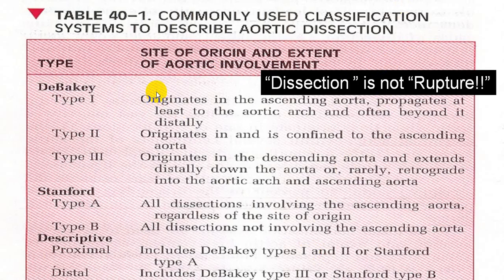Depending upon the dissection, aneurysms are divided into type 1, type 2, and type 3 according to the DeBakey classification. Stanford-wise, they are grouped into A and B, also called proximal and distal. If the proximal portion is involved, it is the proximal variety — type A in Stanford. If the distal portion is involved, it is the distal variety — type B. In the proximal variety, it is further divided into type 1 and type 2, while the distal variety is usually type 3.